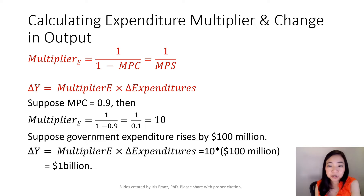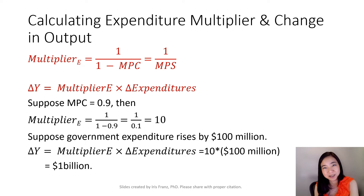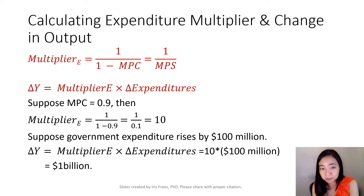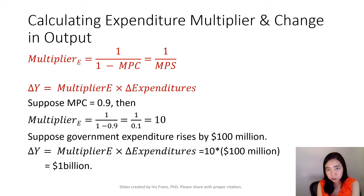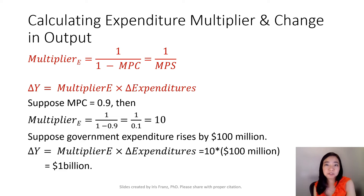Suppose the government expenditure goes up by $100 million. How would that increase our GDP? So the change in GDP — delta y is the change in GDP — is equal to the expenditure multiplier times the change in expenditures. So that will be 10 times $100 million, which gives you $1 billion.